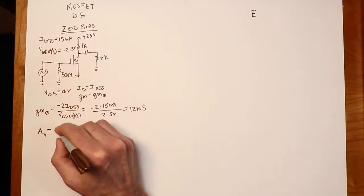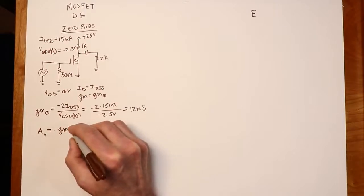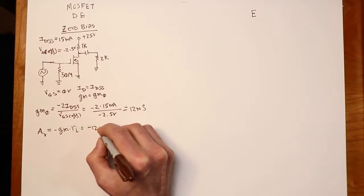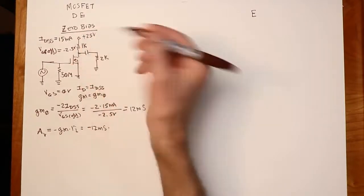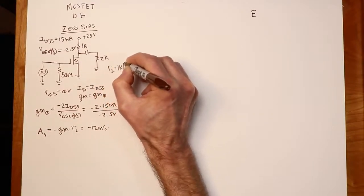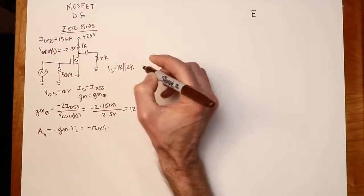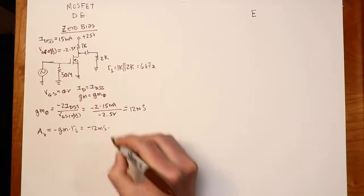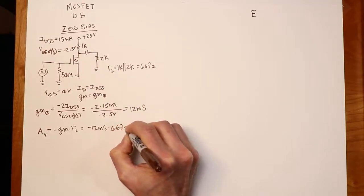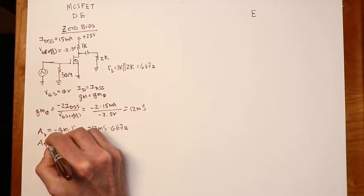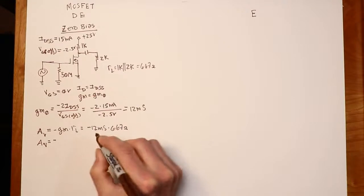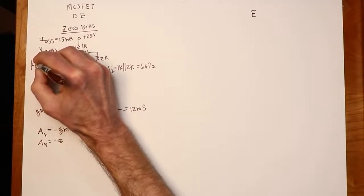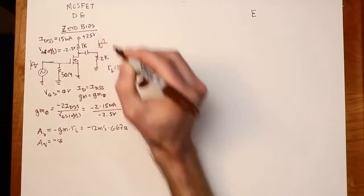No swamping. So that's going to be negative GM times RL or RD, whichever you want to call it. That's going to be 12 millisiemens. Now, what is the load? Well, that's 1K in parallel with 2K. 2 to 1 ratio. So it's going to be two-thirds of the 1K, which is 667 ohms. Okie doke. So put that in here. And your voltage gain is going to work out to basically two-thirds of 12, which is 8. And it's inverting, as expected. In other words, input phase like this, output phase like that.